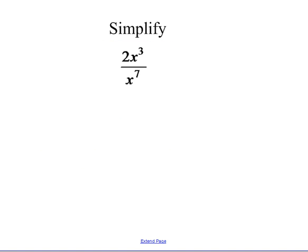For 2x to the third over x to the seventh, the rule says I can take this as x to the 3 minus 7 — top power minus bottom power — which is the same as 2x to the negative 4. We do not want negative exponents when we're done, so that turns into 2 over x to the fourth.